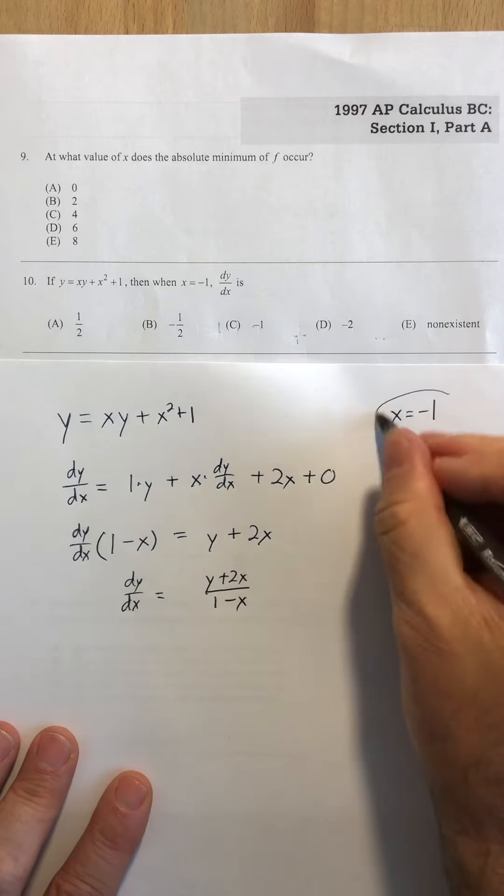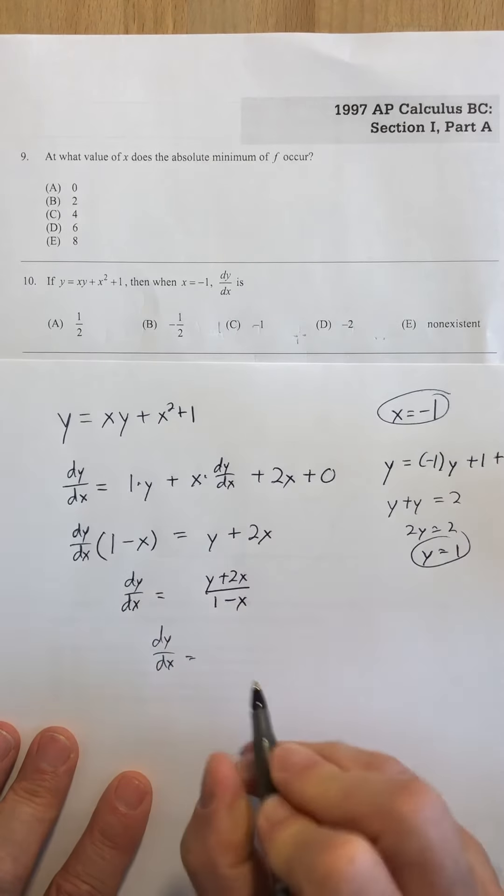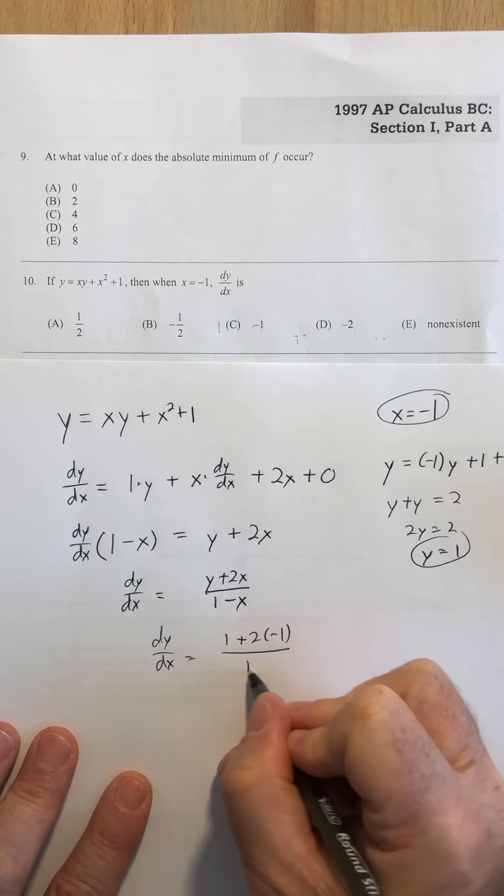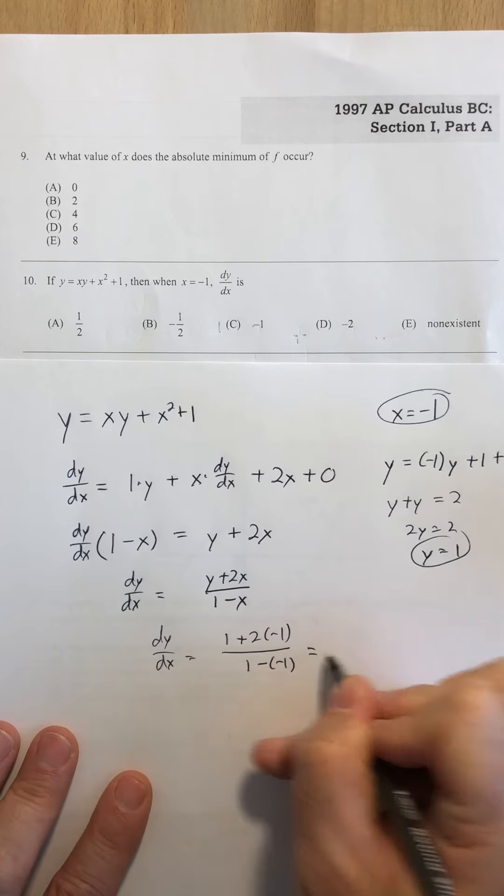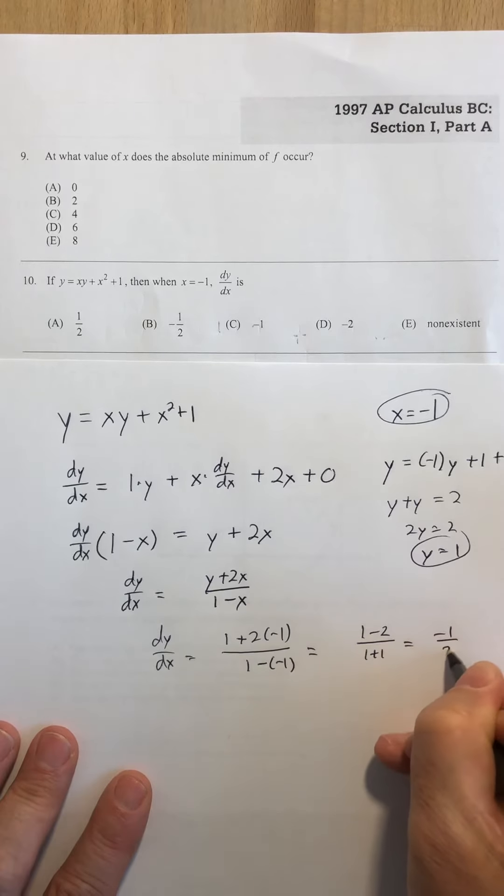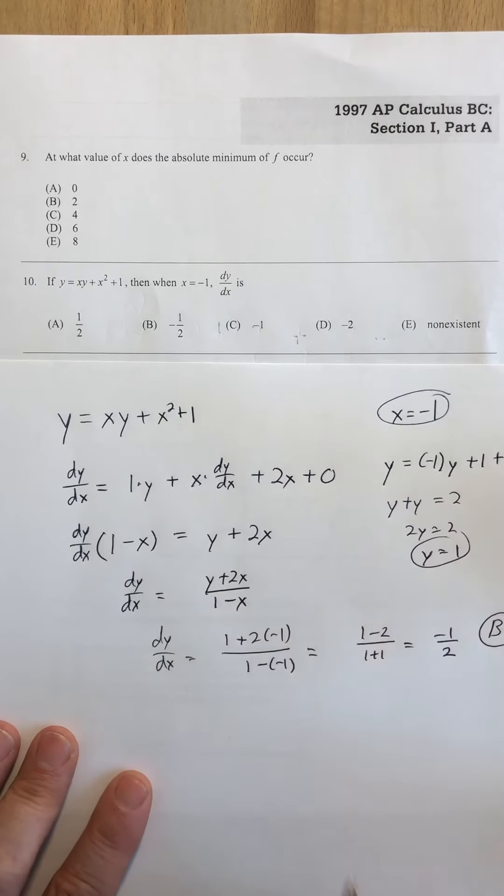So these are the values that I'm going to use in this expression. So my dy dx equals 1 plus 2 times negative 1 over 1 minus negative 1. That's going to be 1 minus 2 over 1 plus 1. Negative 1 over 2 is my answer, and b is what we get.